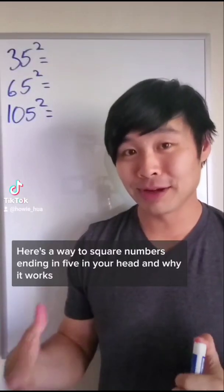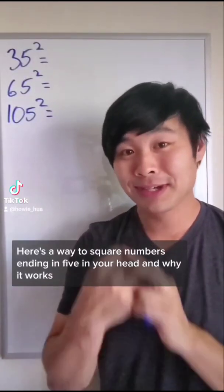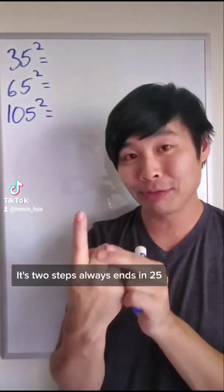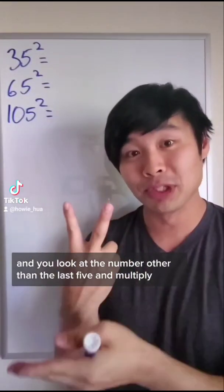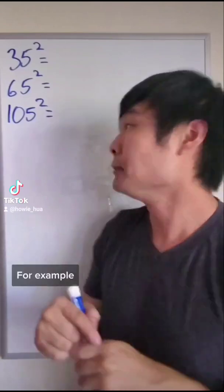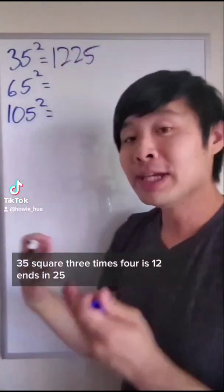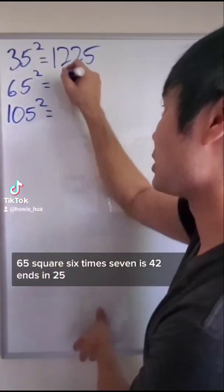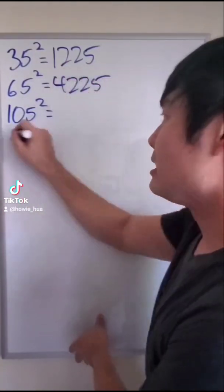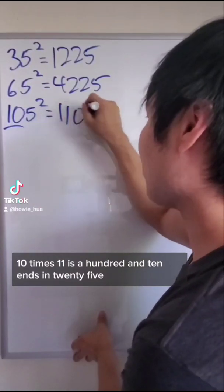Here's a way to square numbers ending in five in your head and why it works. It's two steps. Always ends in 25 and you look at the number other than the last five and multiply it by the next number up. For example, 35 squared, three times four is 12, ends in 25, 65 squared, six times seven is 42, ends in 25, 10 times 11 is 110, ends in 25.